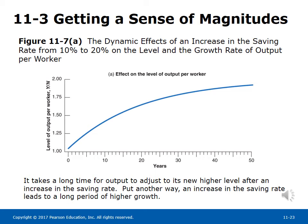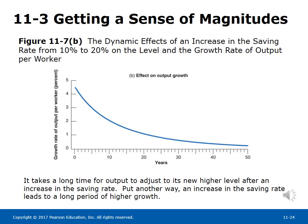The dynamic effects of an increase in the saving rate from 10% to 20% show it takes a long time for output to adjust to its new higher level — in other words, an increase in the saving rate leads to a long period of higher growth. Figure 11-7 shows growth of output per worker is highest at the beginning and then decreases over time. As the economy reaches its new steady state, growth of output per worker returns to zero.